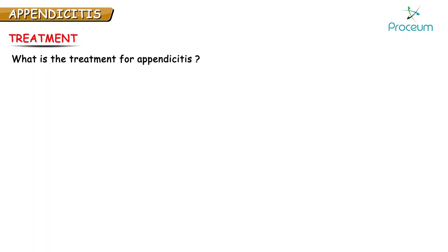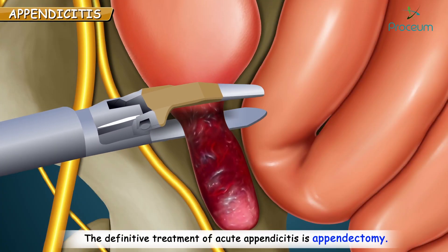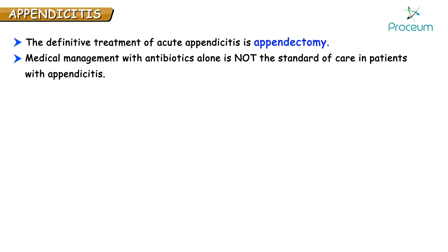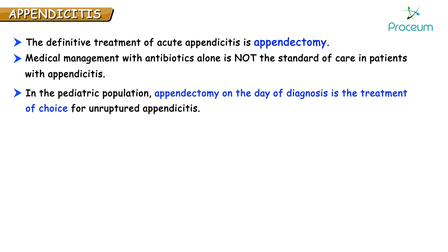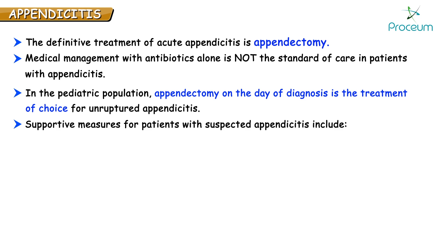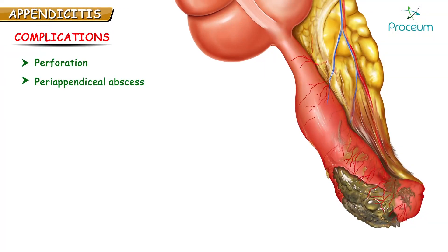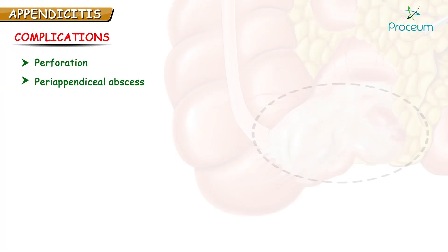Coming to the treatment — the definitive treatment of acute appendicitis is appendectomy. Medical management with antibiotics alone is not the standard of care in patients who present with clinical and radiographic findings consistent with appendicitis. In the pediatric population, appendectomy on the day of diagnosis is the treatment of choice for unruptured appendicitis. Supportive measures include IV fluids, broad-spectrum antibiotics, and electrolyte monitoring. Complications can include gangrenous perforation and abscess formation.